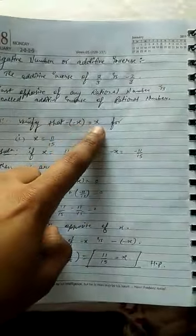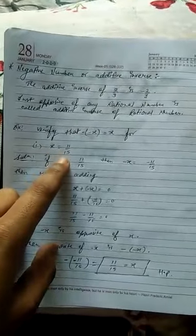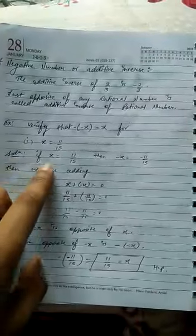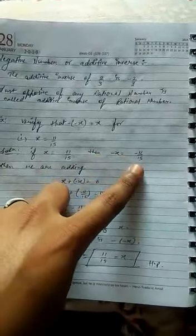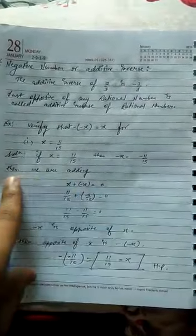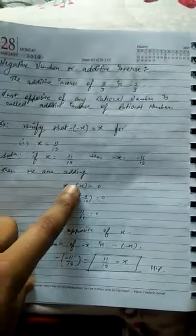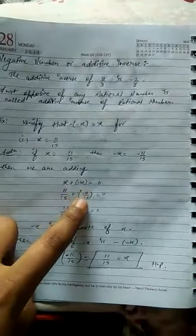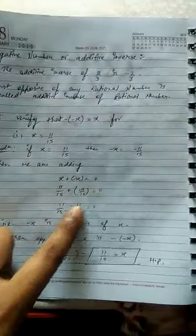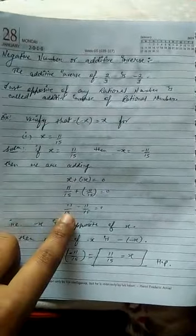Solution: if x equals 11 upon 15, then minus x equals minus 11 upon 15. Then we are adding x plus of minus x equals 0. We know that 11 upon 15 plus of minus 11 upon 15 equals to 0.